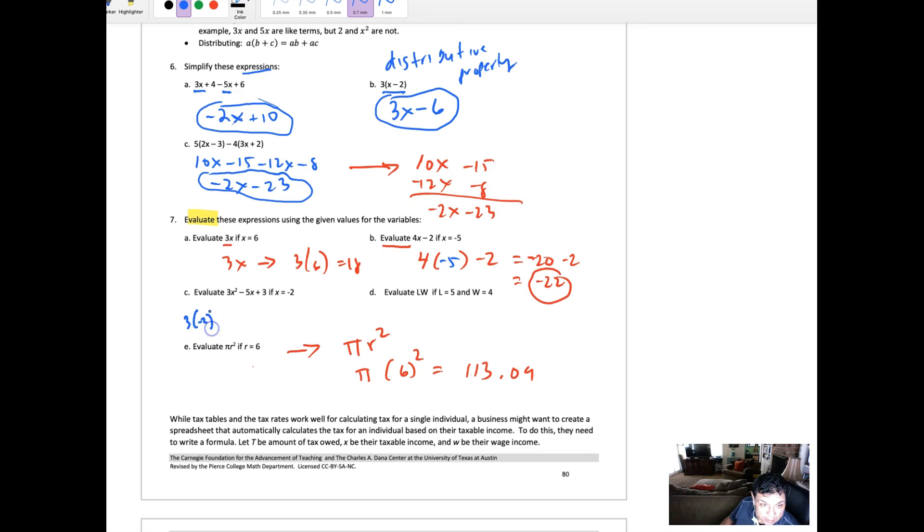And then what does that equal to? So this would equal to positive 4 is 12 plus 10 is 22. This would equal to 25 there.